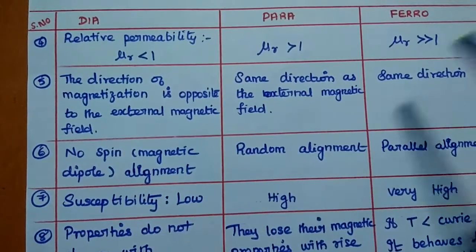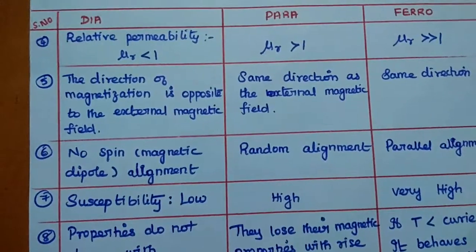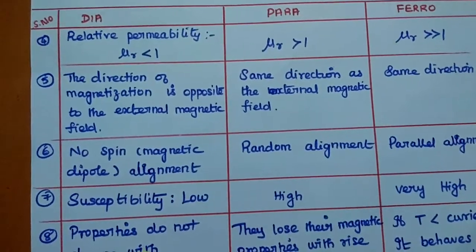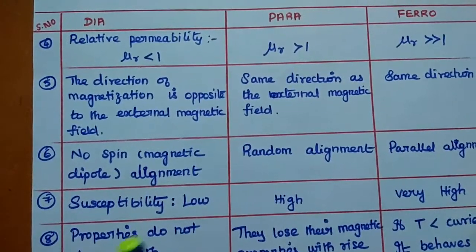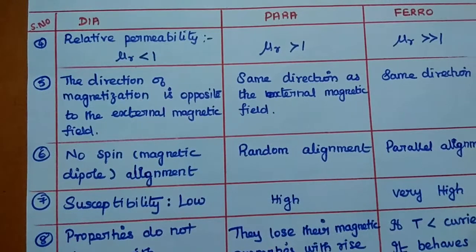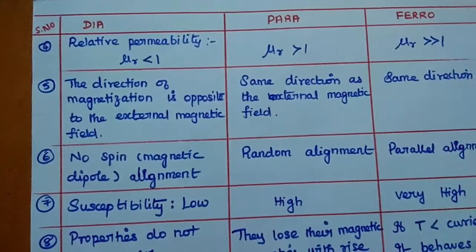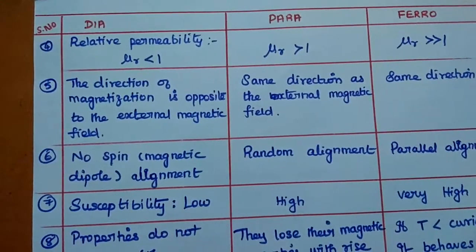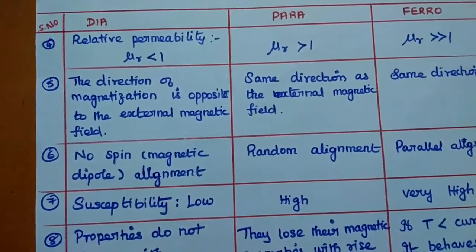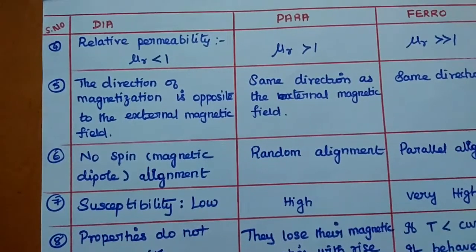Next, let's look at relative permeability. Permeability defines the magnetic properties of a material. For diamagnetic material, the magnetic property is very low, so its relative permeability is also very low. For example, copper has a relative permeability of around 0.00001.